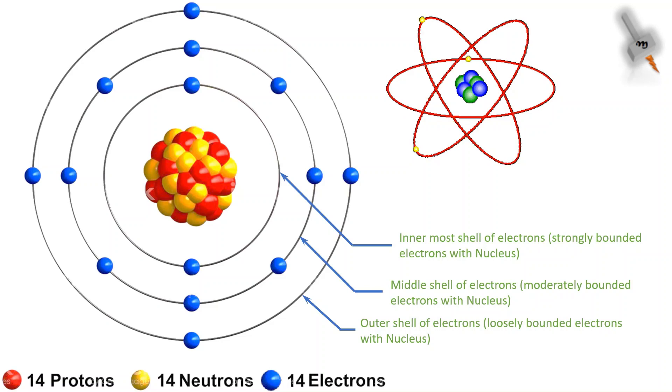The shells of the electrons represent the energy level of the electron. The lower the shell, the stronger is the energy.